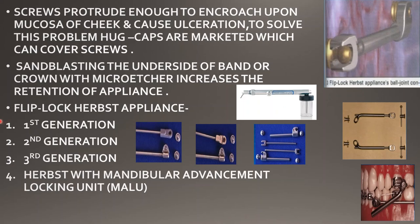The next modification is the flip-lock Herbst appliance. It is a new design that reduces the number of moving parts that can lead to breakage or failure, and it is easier to use and more comfortable for the patient. In the conventional Herbst appliance, a screw is used, but in the flip-lock Herbst appliance, instead of a screw it has a ball joint connector. The flip-lock Herbst appliance has three generations — the first generation is made of plastic.